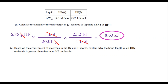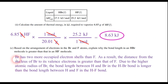The last part of this question asks: based on the arrangement of electrons in the bromine and fluorine atoms, explain why the bond length in an HBr molecule is greater than in an HF molecule. It has to do with electron shells. Bromine has two more occupied electron shells than fluorine, so the distance from the nucleus of bromine to its valence electrons is greater than that of fluorine. Because bromine has a higher atomic radius, the bond length between H and Br is much longer than the bond length between H and F. Give yourself one point if you got that.